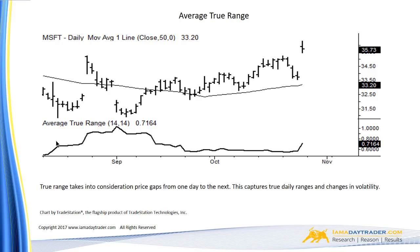Here I'm showing you the average true range as an indicator. As you can tell, when we had those huge gaps, that caused an increase in the ATR values — sure enough, that indicator began to move up. Then you can see prices began to go relatively flat and the ranges begin to get smaller and smaller, so the ATR begins to fall because the ranges themselves are shrinking.